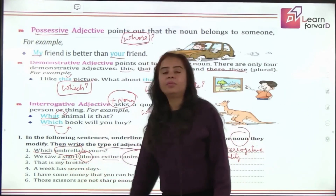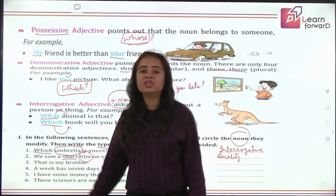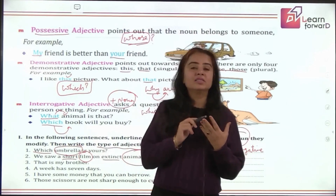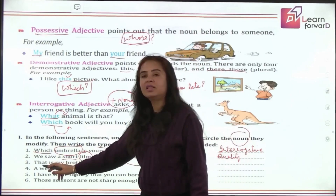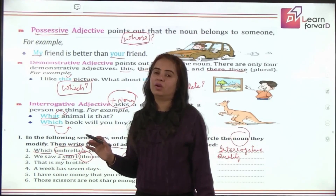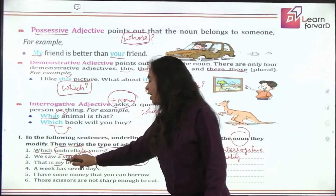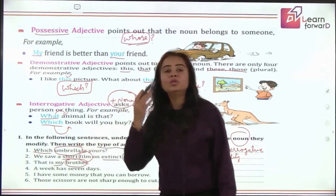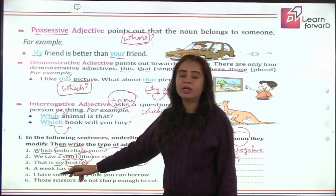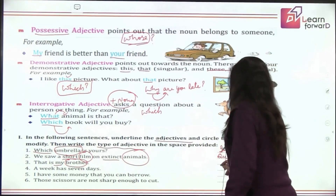Next: 'That is my brother.' A student says 'that' is the adjective, but 'that' is not followed by a noun here — so it is not a demonstrative adjective. The adjective here is 'my' — 'my brother.' We ask whose brother? My brother. There is a noun 'brother' with it, and it gives an answer to 'whose,' so it is a possessive adjective.